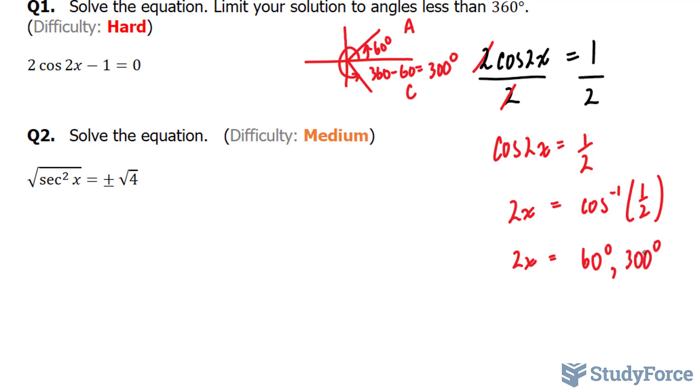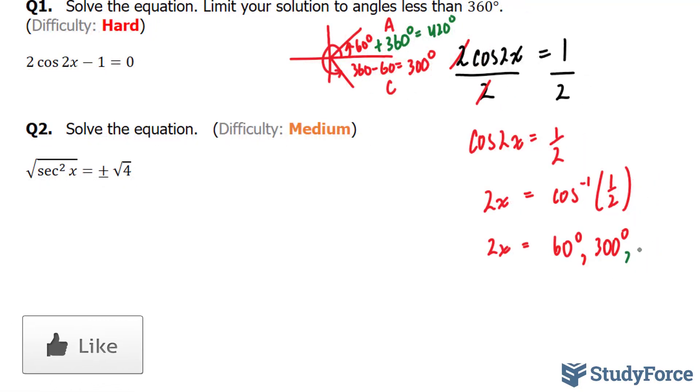Also keep in mind coterminal angles. So if I add 360 to 60 degrees, I end up with 420. That will also serve as an angle. That will also produce, if I write down cosine of 420 to my calculator, I'll get half. And similarly, if I add 360 to 300, I end up with 660.